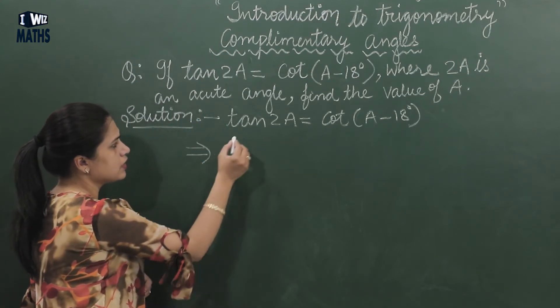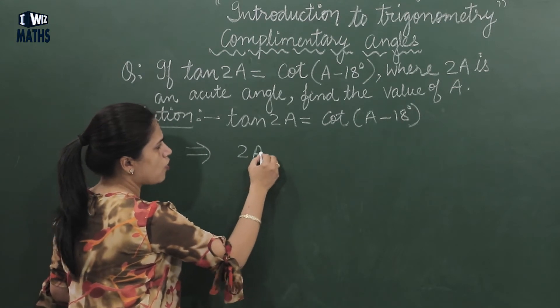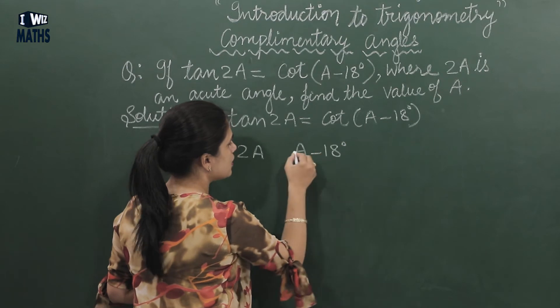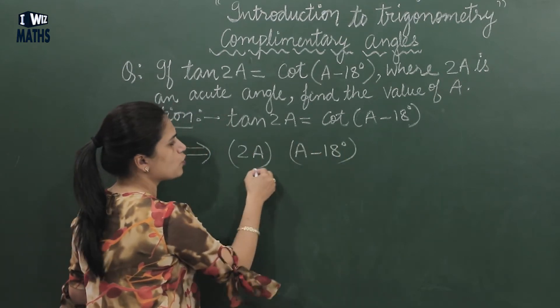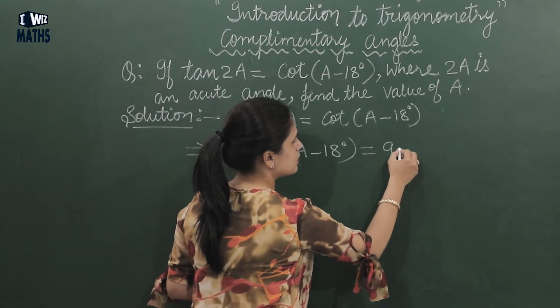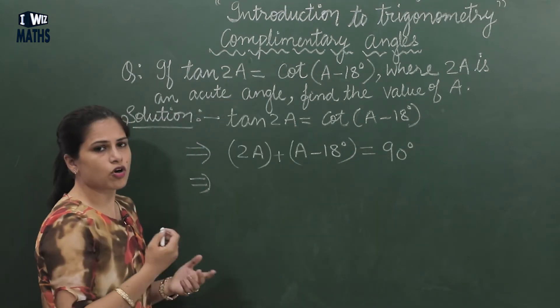So from this line, we understand that this implies that its angle, meaning 2A, and its angle, meaning A - 18°, these two are complementary. Meaning both have a sum equal to 90°.